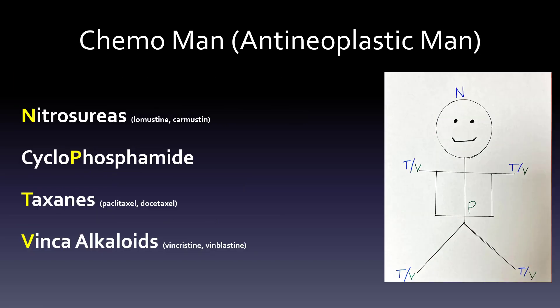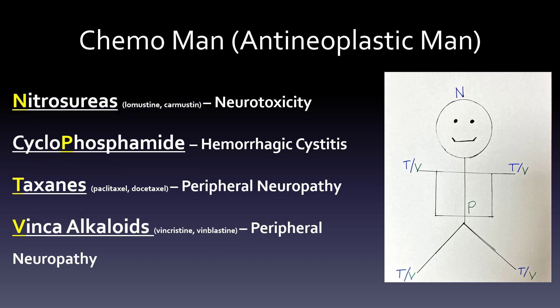Then we have the nitrosureas — lomustine and carmustine — cyclophosphamide, taxanes paclitaxel and docetaxel, and the vinca alkaloids vincristine and vinblastine. N is going to be on top for neurotoxicity, put on top of the brain because it gets to the blood-brain barrier. Hemorrhagic cystitis is going to be cyclophosphamide with that P. Peripheral neuropathies are going to be both the taxanes and the vinca alkaloids — think of T and V as in television. So N, P, and TV — those are the two chemo mans.